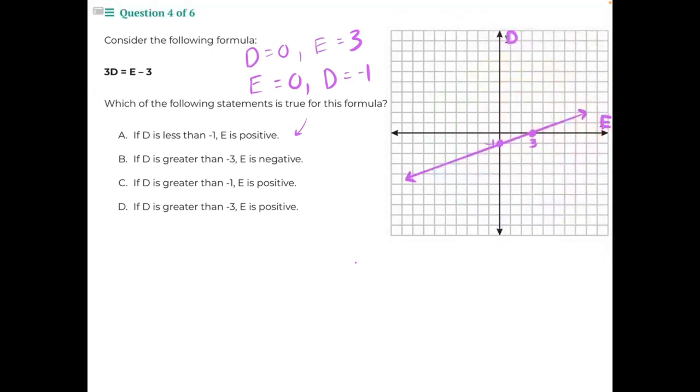Starting with answer choice A. If d is less than negative 1, so all of this over here, when d is less than negative 1, e is positive.